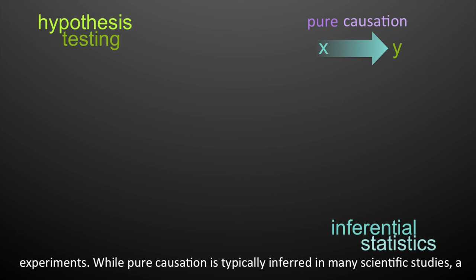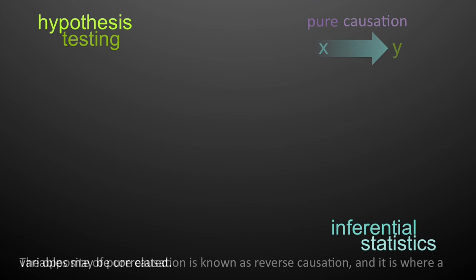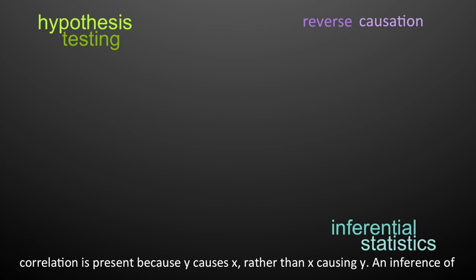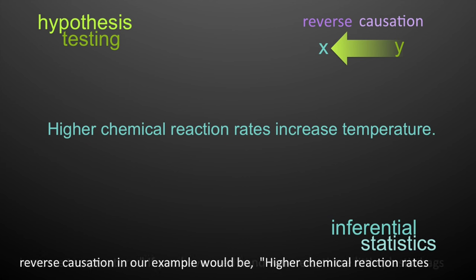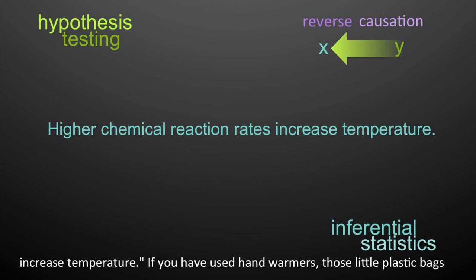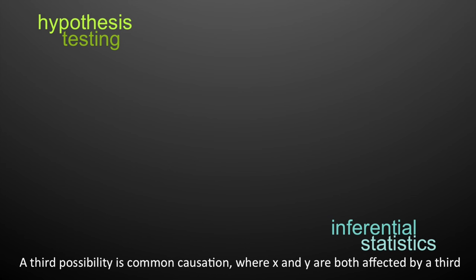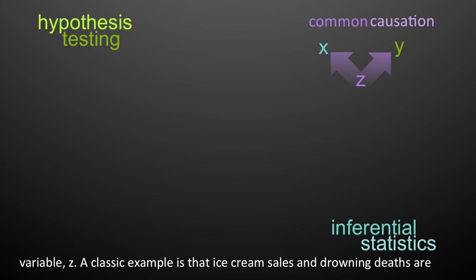While pure causation is typically inferred in many scientific studies, a scientist should always consider the many different mechanisms by which two variables may be correlated. The opposite of pure causation is known as reverse causation, where a correlation is present because Y causes X rather than X causing Y. An inference of reverse causation in our example would be: higher chemical reaction rates increase temperature. If you've used hand warmers, you've experienced the effect of chemical reactions generating heat.